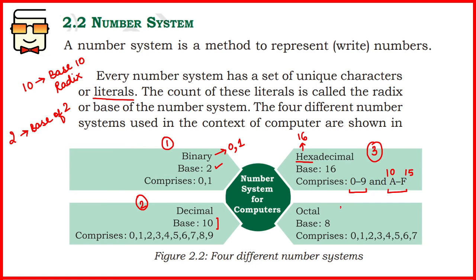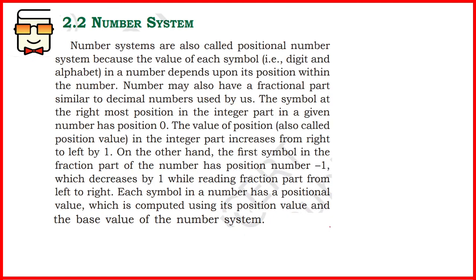The last major number system important in computer science is the octal number system. It consists of eight unique digits or literals, which gives it a base of 8. There are also a few general things you must remember about any number system. The number systems we study in this chapter, with respect to computer science, are also known as positional number systems.